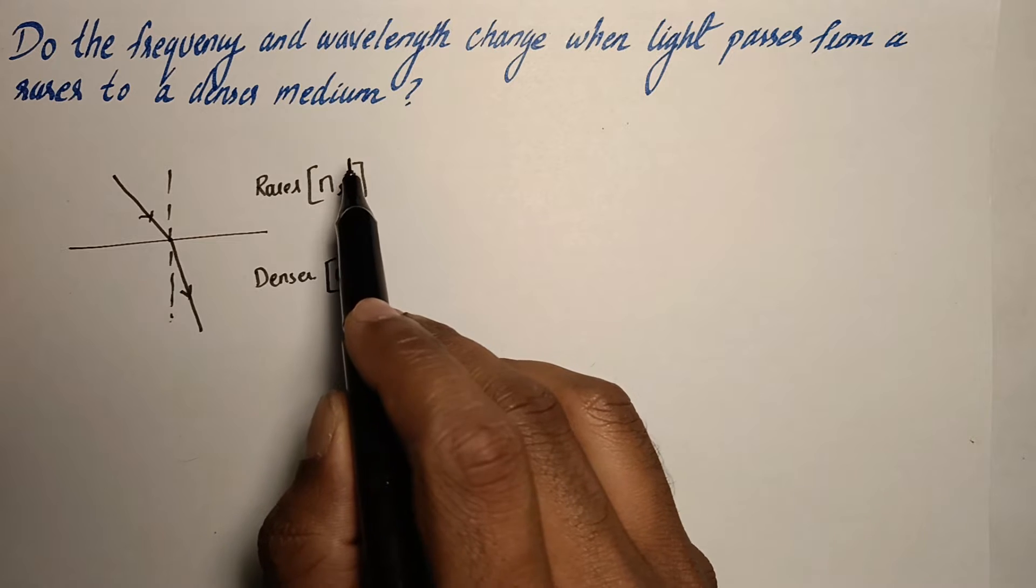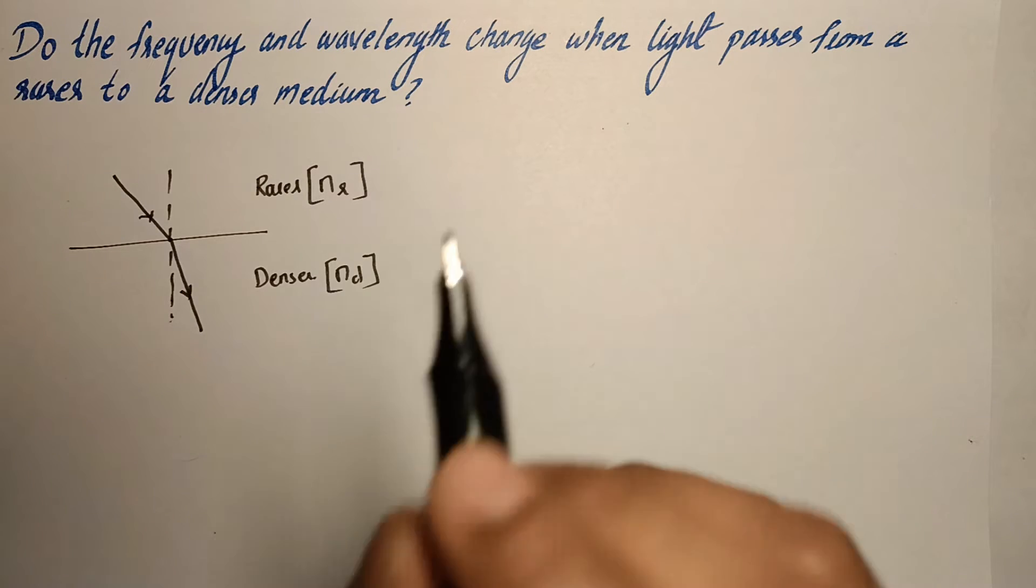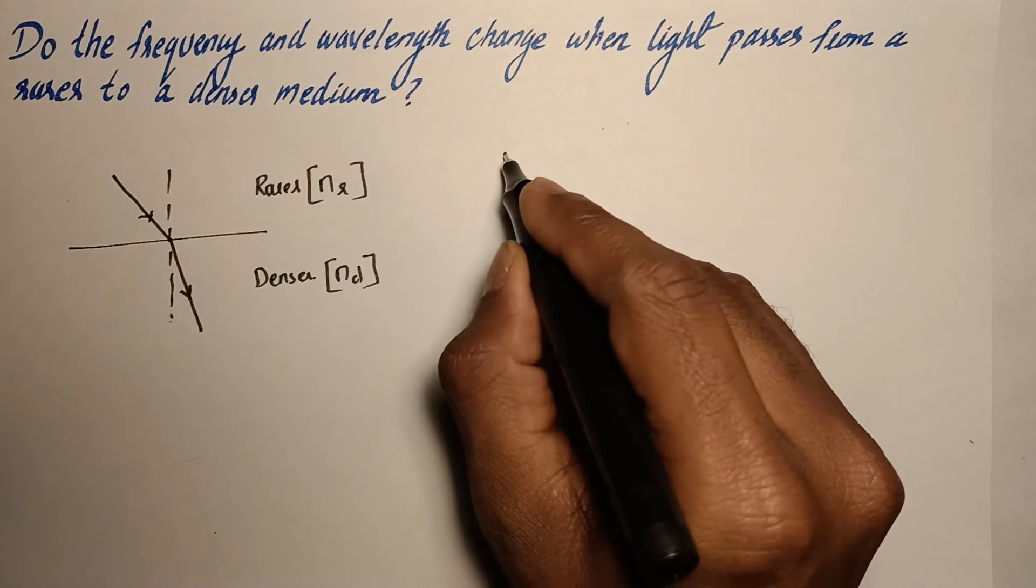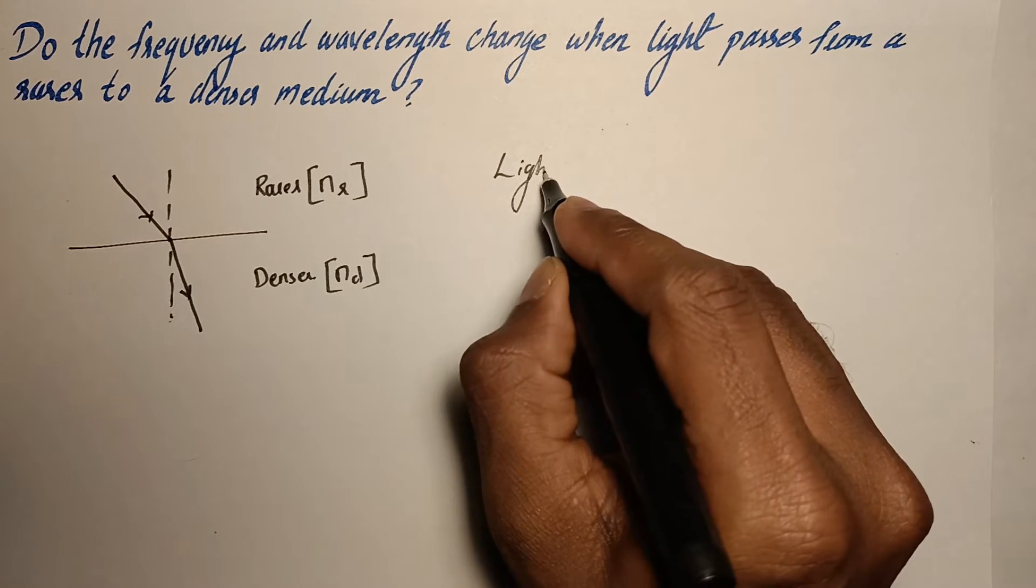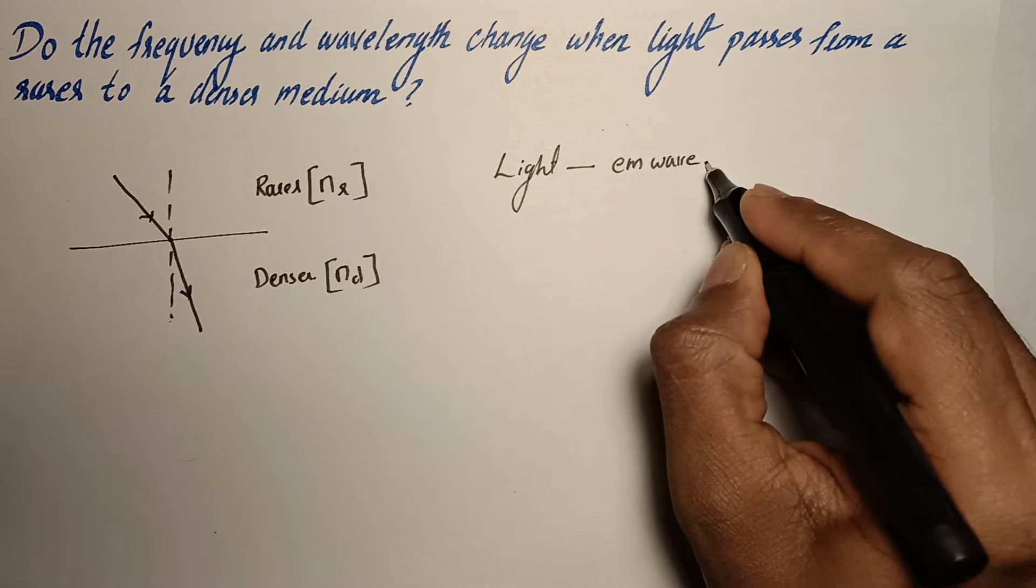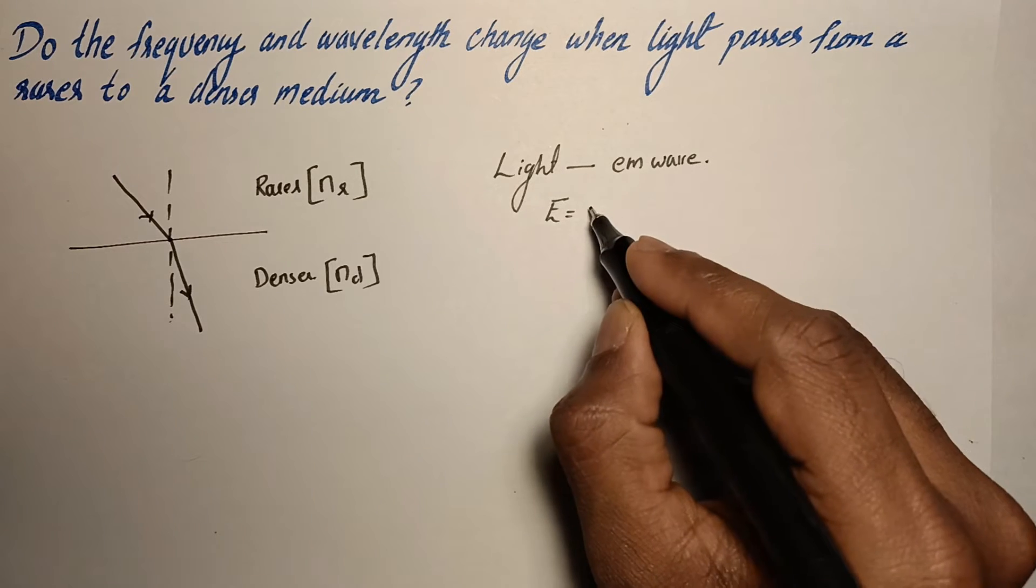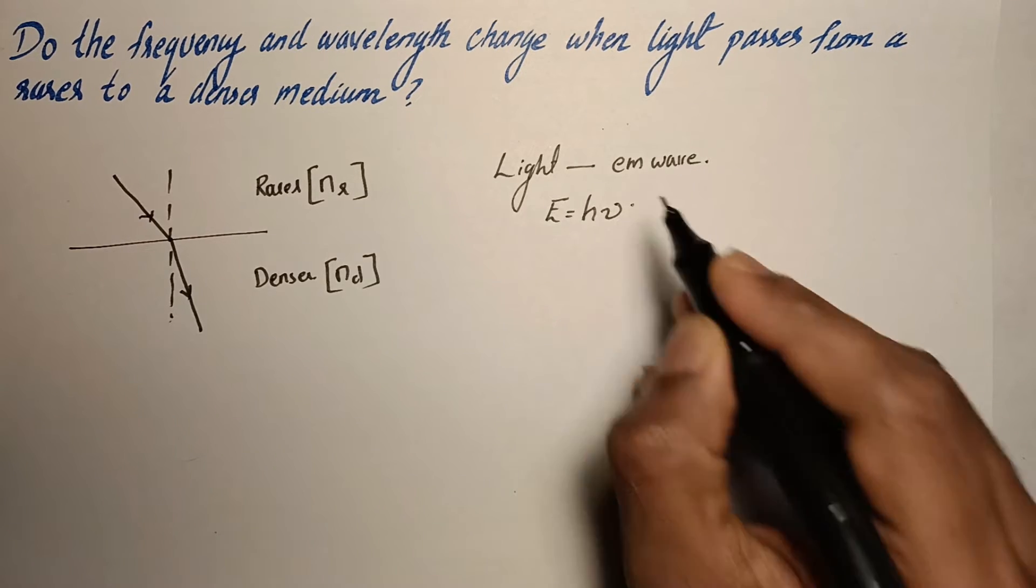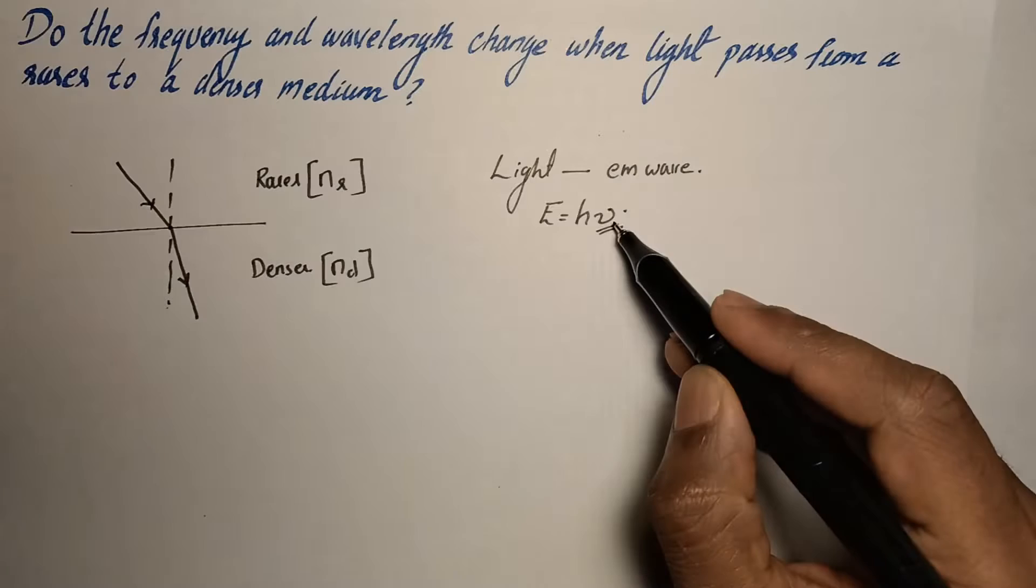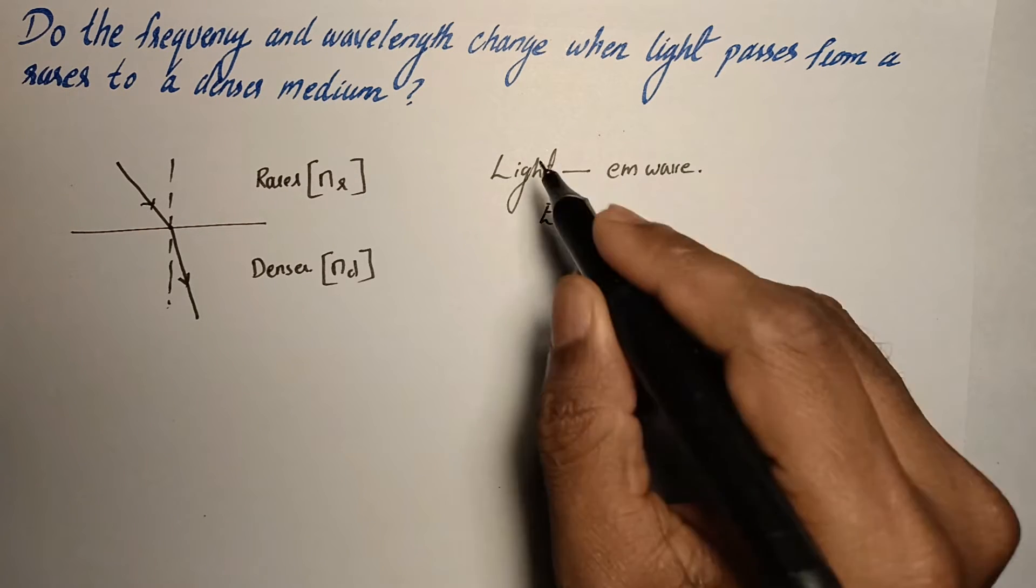So they are asked to state whether its frequency changes. First let us understand light is an electromagnetic wave, and for an electromagnetic wave, the energy is given by h nu. So frequency of the light is determined by the source itself.